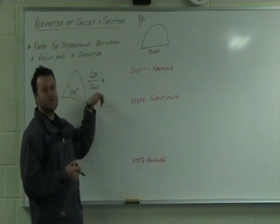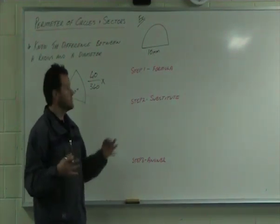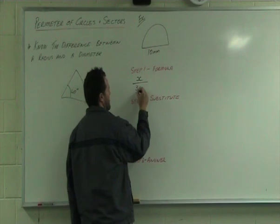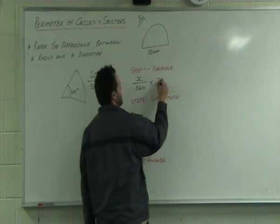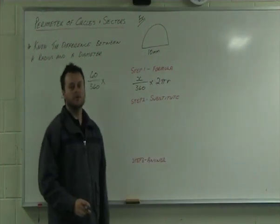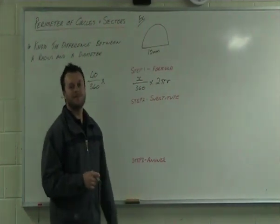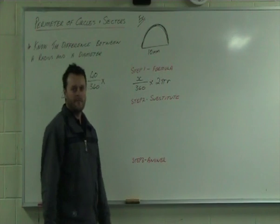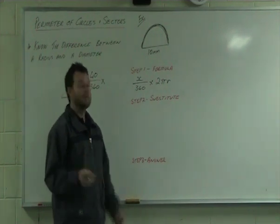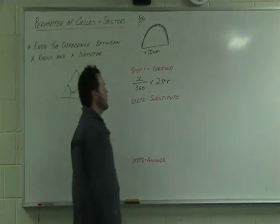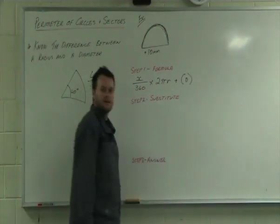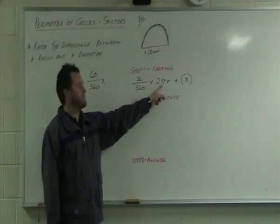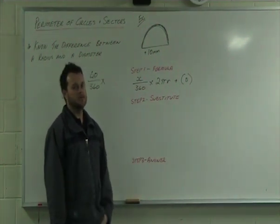Sectors simply mean we're working with a fraction of the total. The formula is: angle over 360, times the circumference of the full circle. But when I find the circumference, I'm only finding the curved arc — I still need to add on the diameter (the two straight edges). So the full formula is: fraction of the circle times the circumference, plus the diameter.